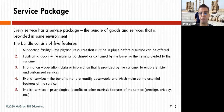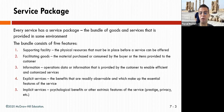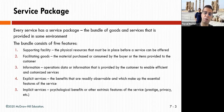Explicit services are the benefits that are readily observable and make up the essential features of the service — for example, when you buy mobile service, you can make phone calls. Implicit services are the psychological benefits or prestige, like getting an iPhone 11 or 12 from Bell.